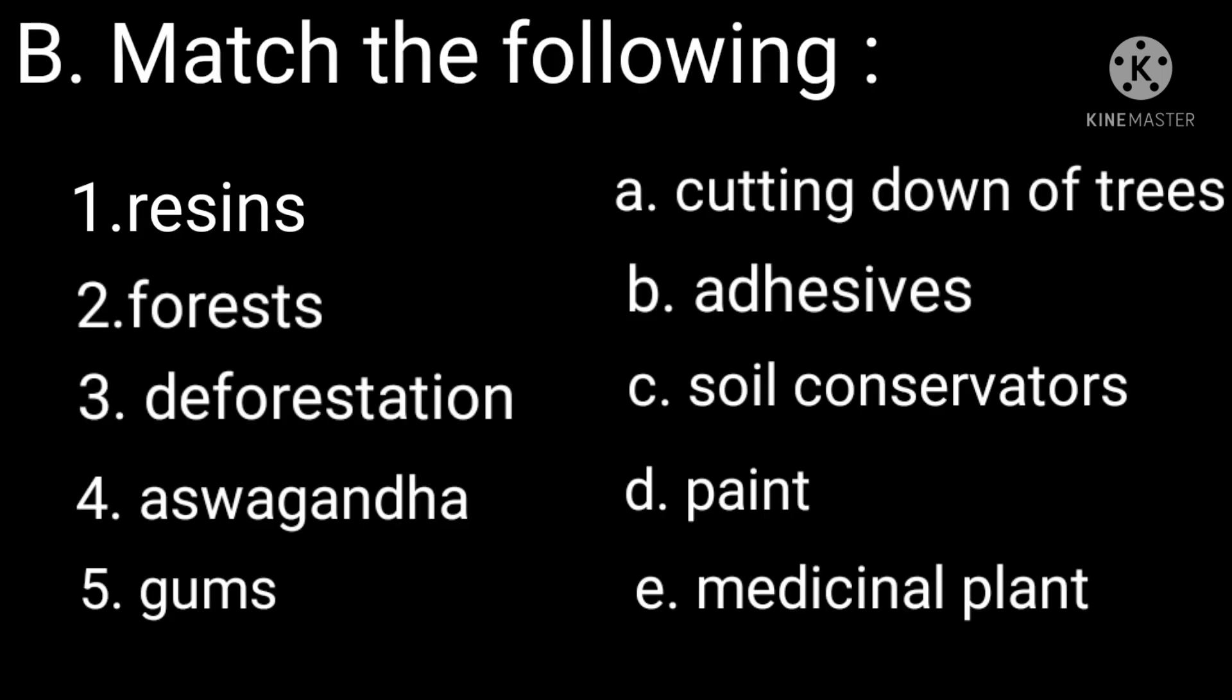Let's move to part B. Match the following. First is resin and it will be matched with option D, paint. Number 2, forest will be matched with option C, soil conservators.